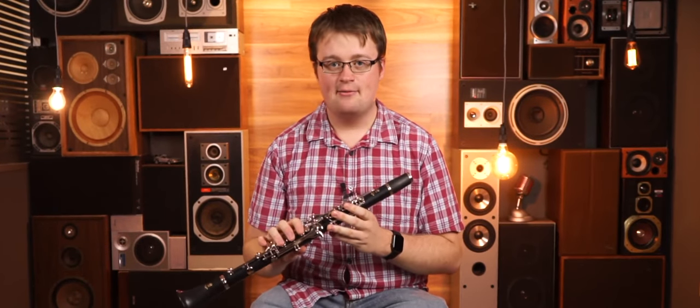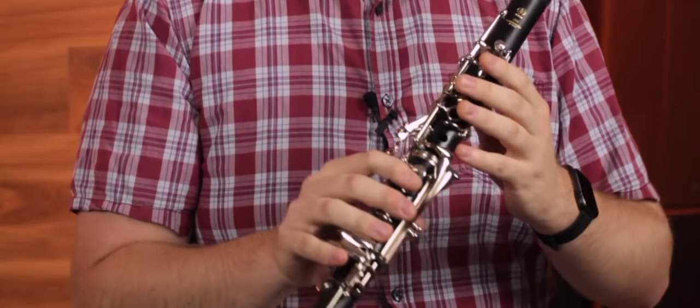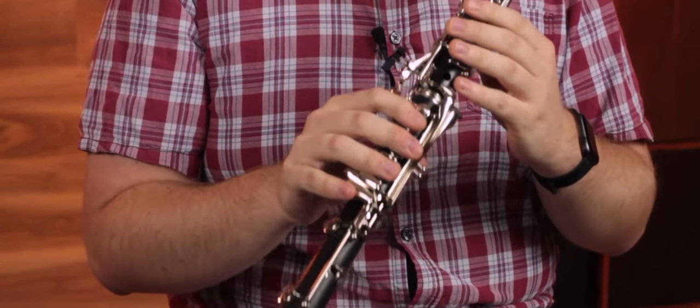So our first clarinet today is the Yamaha YCL255. Once again Yamaha make the standard instrument when it comes to student instruments. Certainly the vast majority of students are playing on something just like this and it's a really good way of getting started. An ABS resin body, which is fairly standard on almost all of the models that we have today, but a really good key action, very easy to play and fairly low maintenance as well. You will need to get it serviced occasionally but generally speaking if you look after it this is a great instrument to last you through school.